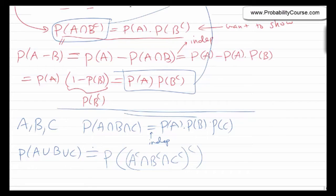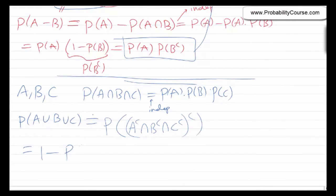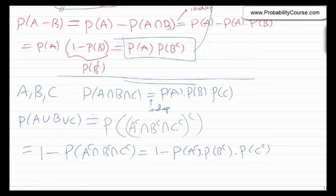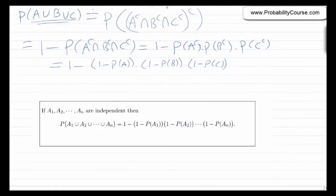This equals 1 minus probability of A complement and B complement and C complement. By the lemma, since A, B, and C are independent, A complement, B complement, and C complement are also independent. So we can write it as probability of A complement times probability of B complement times probability of C complement, which equals 1 minus probability of A, times 1 minus probability of B, times 1 minus probability of C. This is a useful trick for finding the probability of the union of independent events.